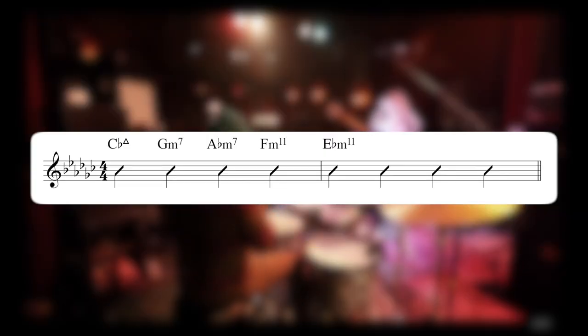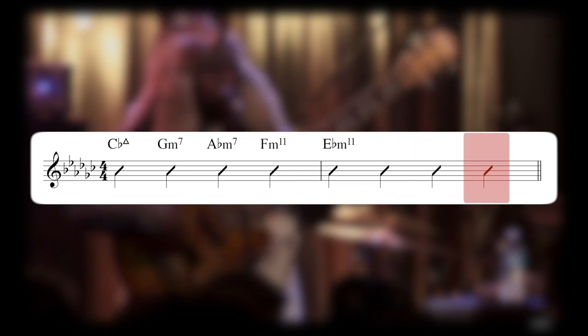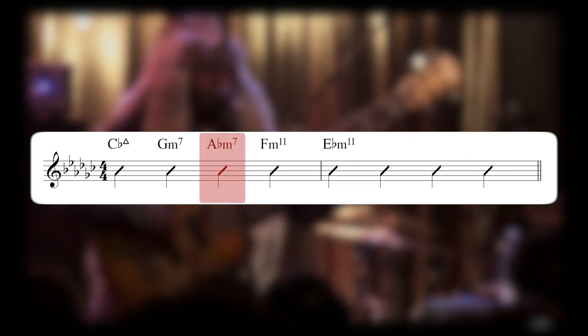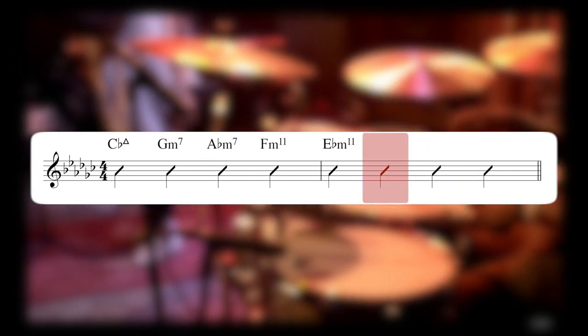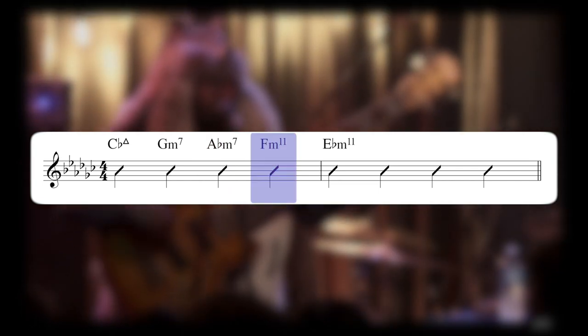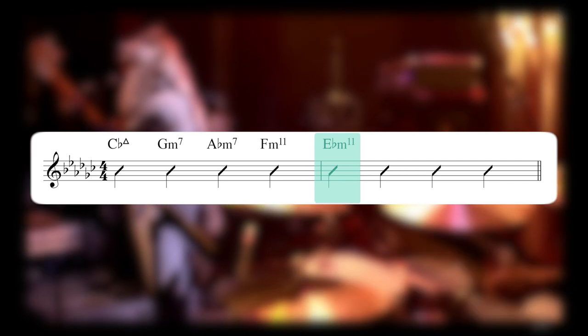The chord progression is a two bar loop. We have a C flat major 7, G minor 7, A flat minor 7 and F minor 11 on the first bar, and the second bar is just E flat minor 11.